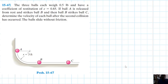Hello, I welcome you all. The three balls each weigh 0.5 pounds and have a coefficient of restitution of 0.85. If ball A is released from rest and strikes ball B, and then ball B strikes ball C, determine the velocity of each ball after the second collision has occurred.